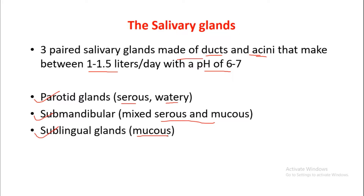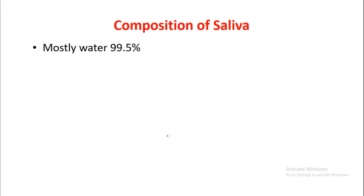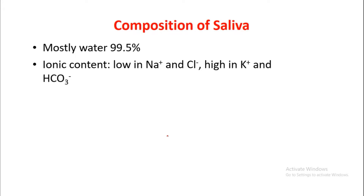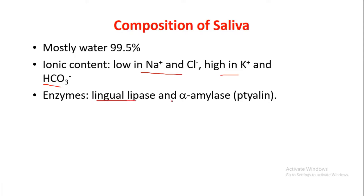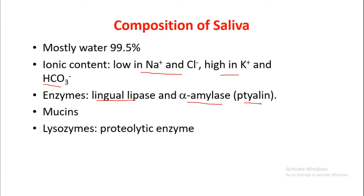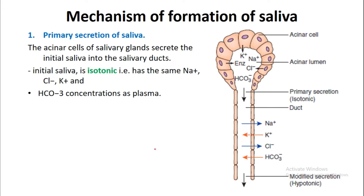The composition of saliva is mostly water at 99.5%. Its ionic content is low in sodium and chloride but high in potassium and bicarbonate. Enzymes include lingual lipase and alpha-amylase, also known as ptyalin, as well as mucins, lysozymes, proteolytic enzymes, and immunoglobulin A (IgA).